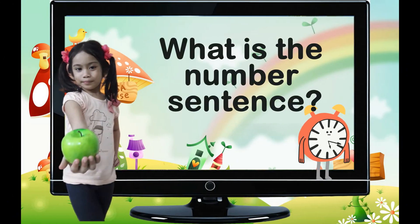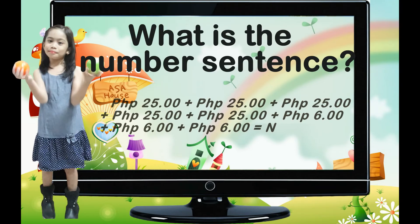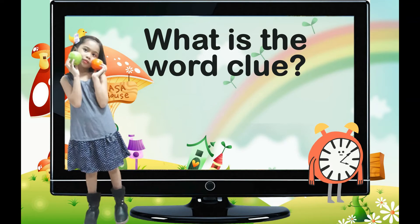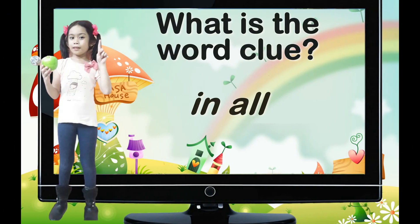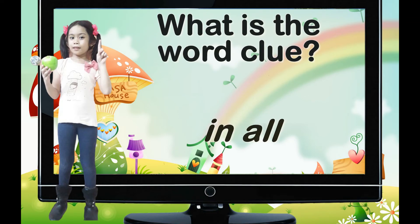What is the number sentence? 5, 4, 3, 2, 1 — go! And the answer is — look at the screen. Did you get it right? Smart kids! What is the word clue? The answer is 'in all.' Great work!